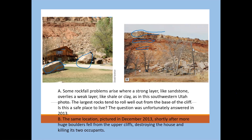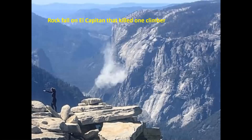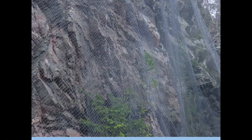More boulders fell into the area below, the house was destroyed, and the two people living inside were killed. Pay attention to things like that when buying real estate. This is a rock fall from a couple of years ago on El Capitan in Yosemite that killed one climber. In areas where motorists travel beneath unstable rocks, a type of metal screening is draped over the rocks — it must be strong enough to catch boulders of a certain size moving at a certain speed.